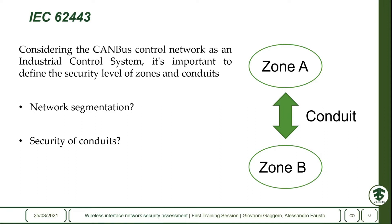Applying this parallel to CAN-based control networks, we must ensure that all interfaces allowing access to the main control network — for example, all wireless interfaces — must guarantee an adequate security level.